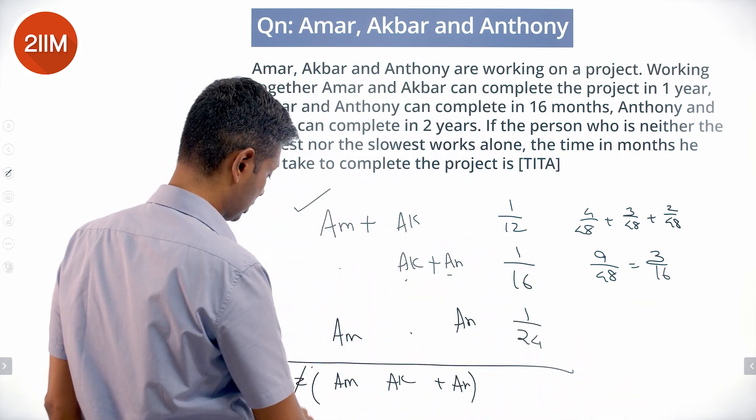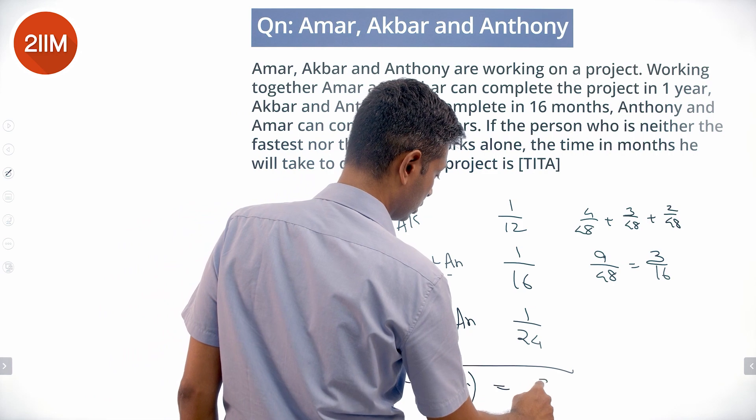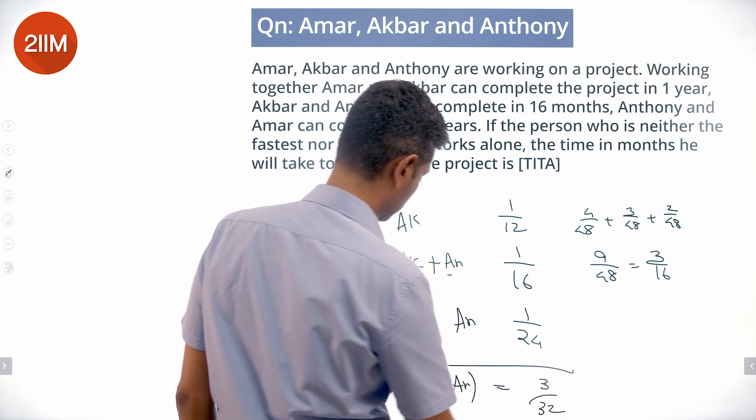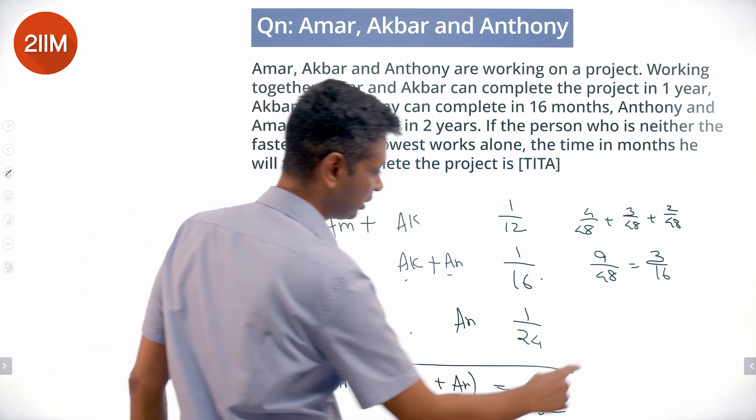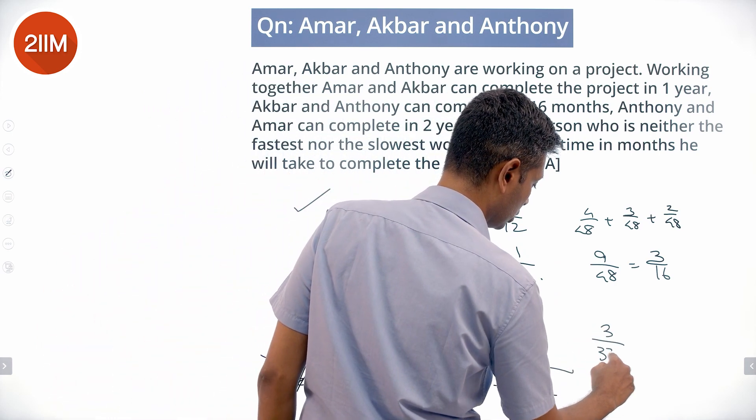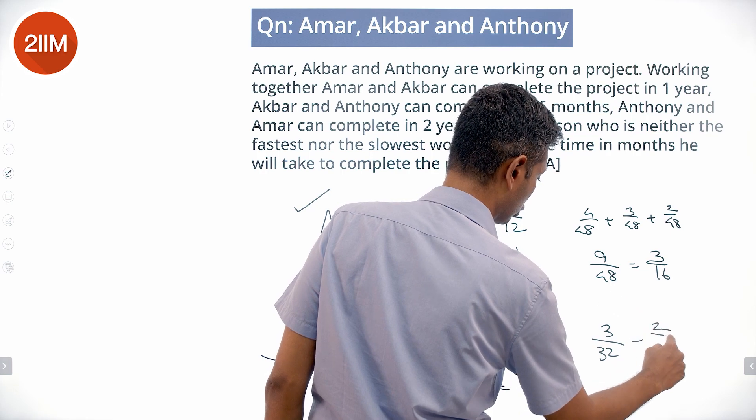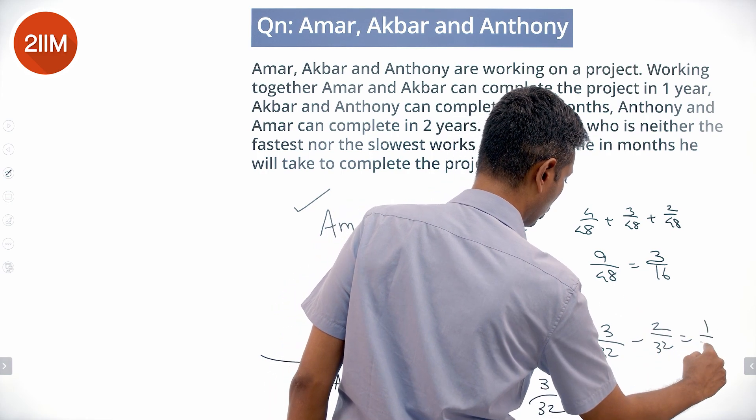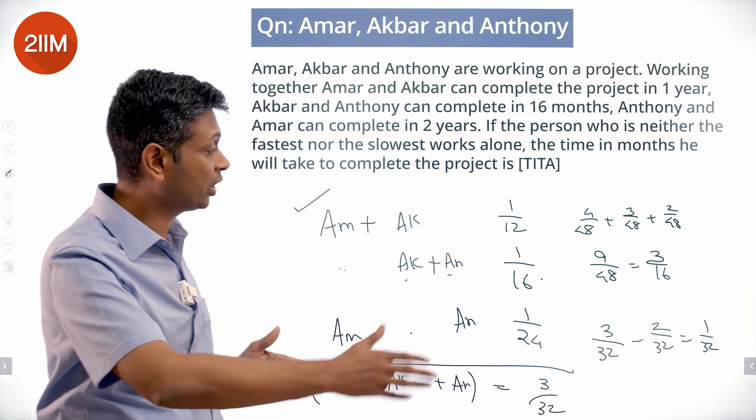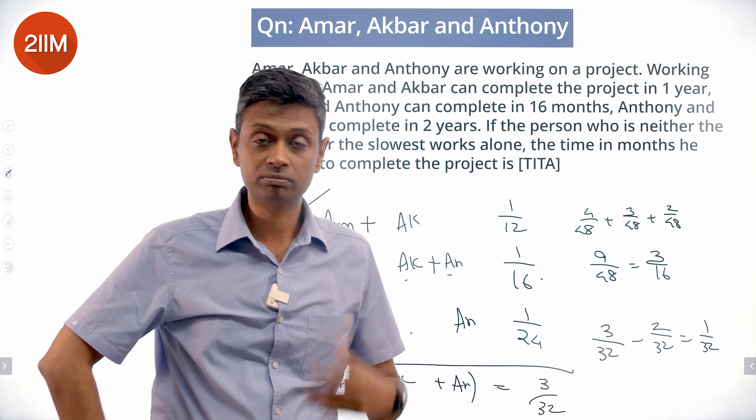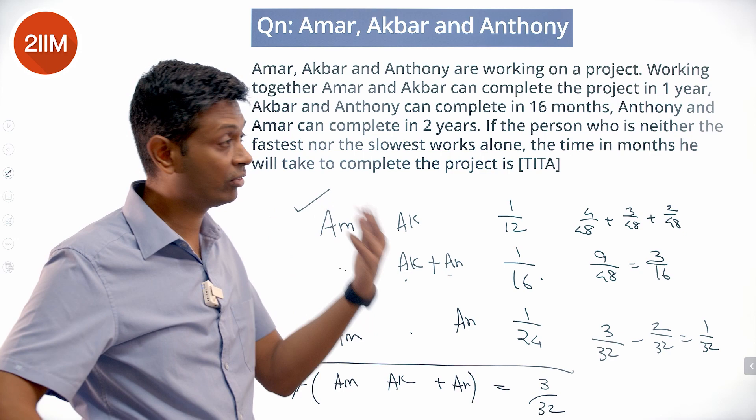So Amar + Akbar + Anthony is 3/32. We want to find Amar. From 3/32 subtract 1/16 (or 2/32), we get 1/32. So Amar is 1/32, meaning Amar alone will take 32 months, which is 2 years and 8 months.